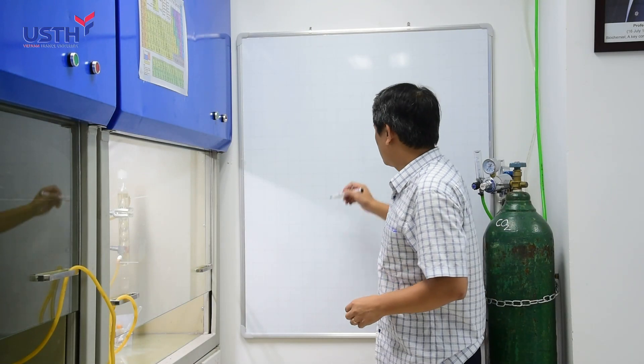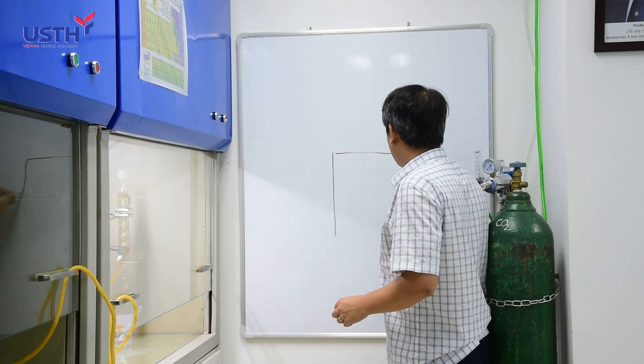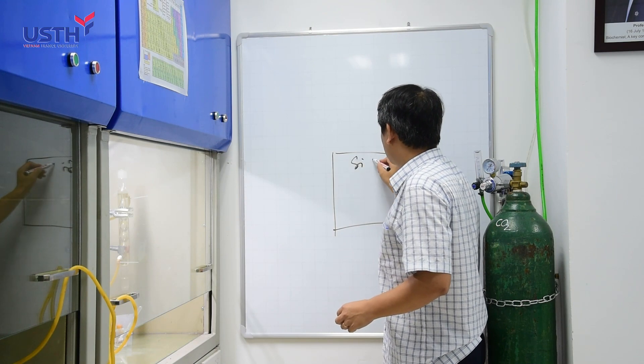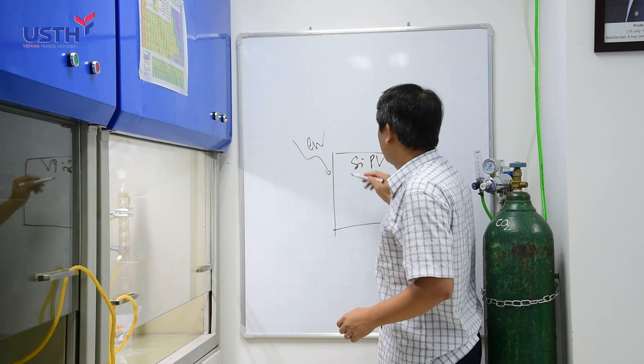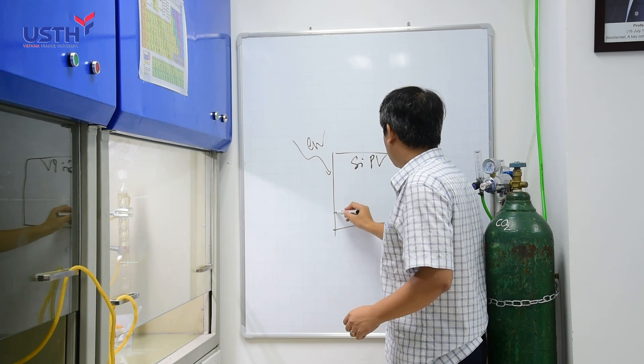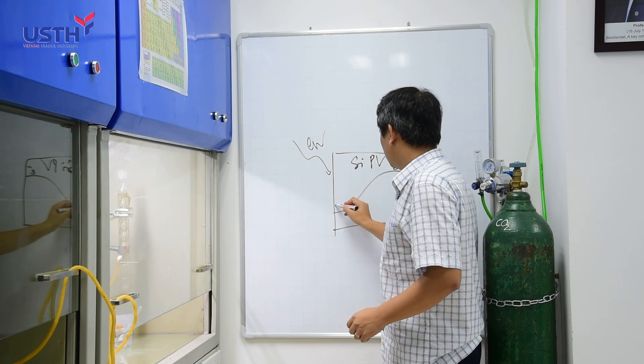So, the concept of our approach is trying to use a light absorber like silicon solar cell that absorbs the sunlight and then it will harvest into electrons and holes.